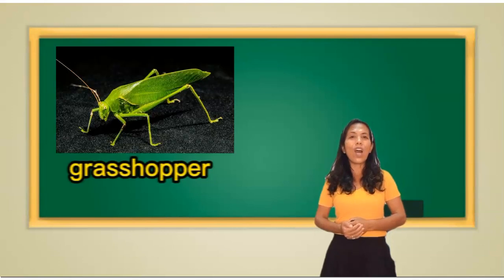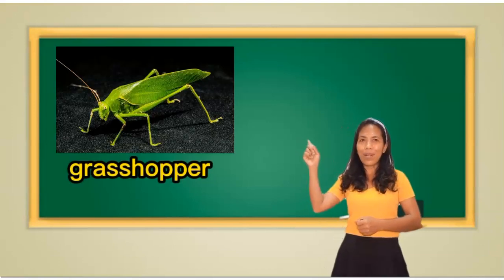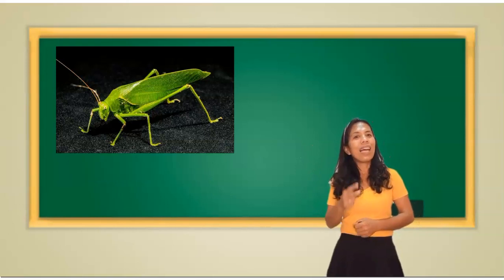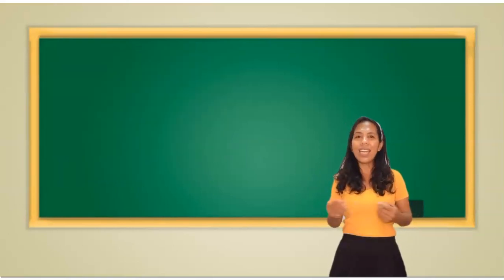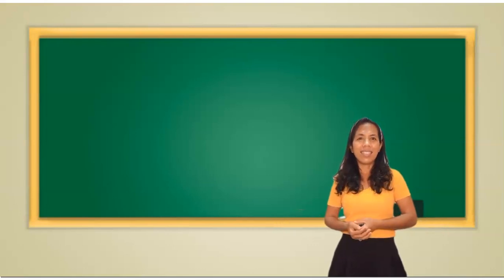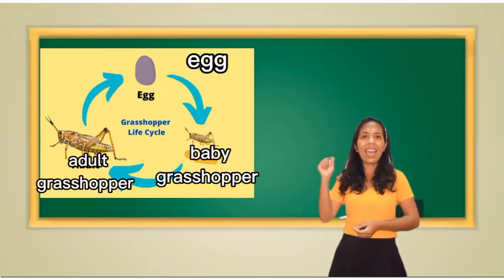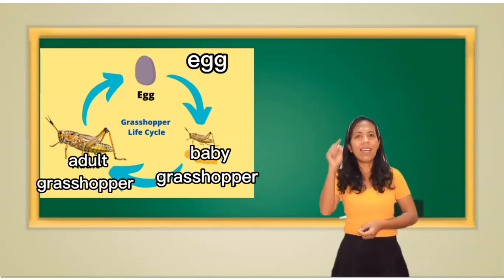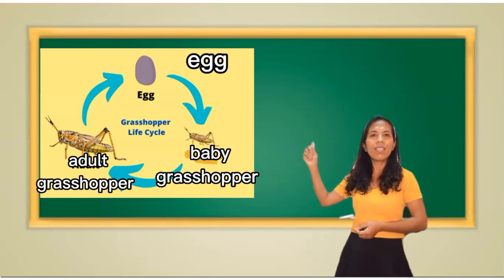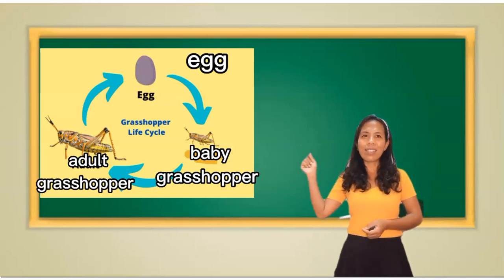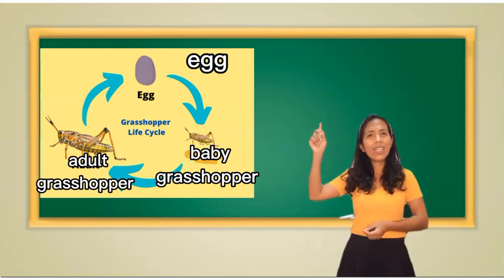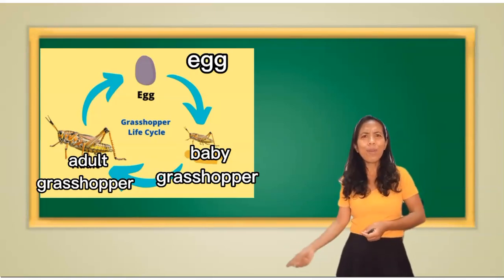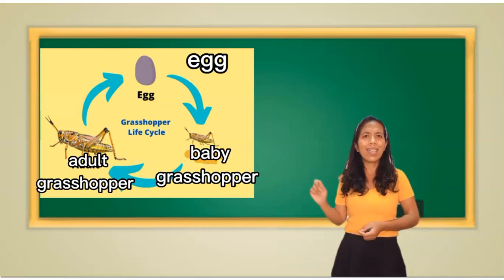Let's look at the life cycle of a grasshopper. The life cycle of a grasshopper is very easy. It starts from an egg. The egg will turn into a baby grasshopper, the baby grasshopper will turn into an adult grasshopper, and the adult grasshopper will lay eggs. The cycle continues — repeats and repeats.